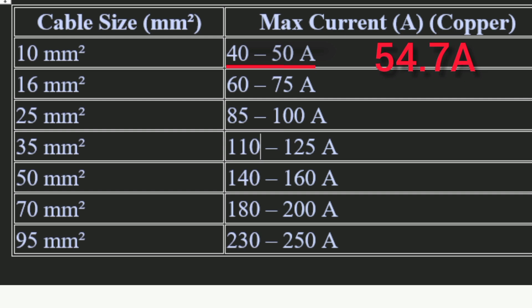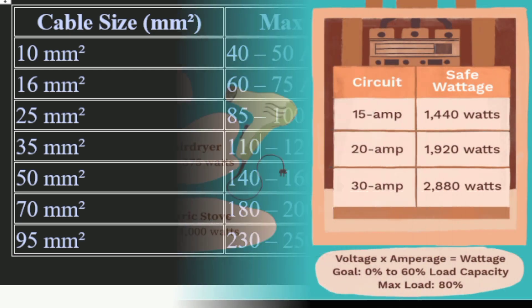Comparing with our calculated value of around 54–55 amps, the 10mm² cable is insufficient. The 16mm² cable can carry up to 75 amps, which is appropriate for our system requiring a demand current of 54.7 amps. Since the cable's capacity significantly exceeds our demand, there is no need for further power factor calculation — the cable is big enough to handle any excess.